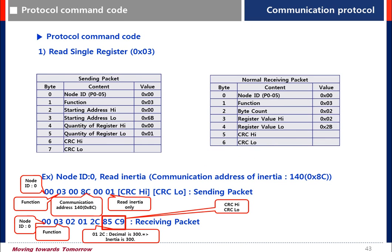Let's see the protocol command code. Refer to the sending packet table. In this example: 00 is the node ID, 03 is the function code, 008C is the starting address (high and low), and 0001 is the quantity of registers.